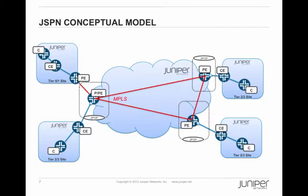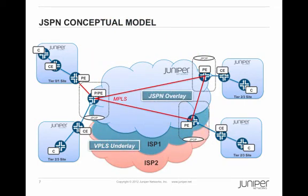At our Tier 2 and Tier 3 sites, which are smaller, we don't need that functionality, and at those sites, we still use a CE router on site. Because we have a global WAN, we can't actually afford to have dedicated circuits between all of our sites, so we're running our MPLS on top of VPLS from two different service providers. Thus, the Juniper Service Provider Network, or JSPN, is an overlay on top of dual ISP VPLS, which is an underlay. We actually don't care that it's VPLS — it could be any Layer 2 service. It just happens to be the most efficient way for us to get connectivity to all of our sites.